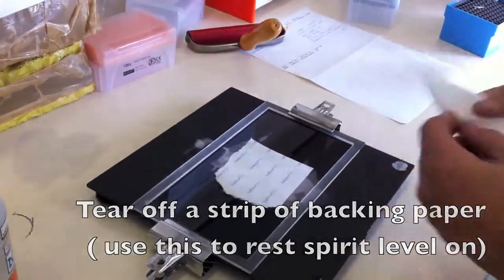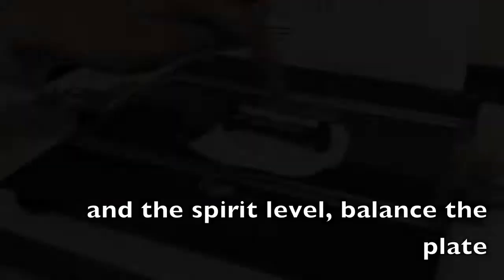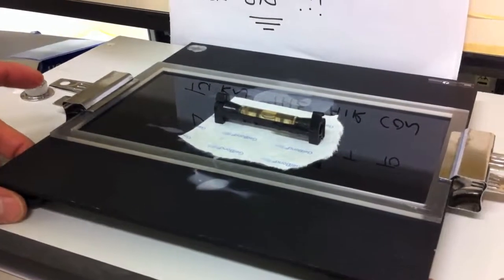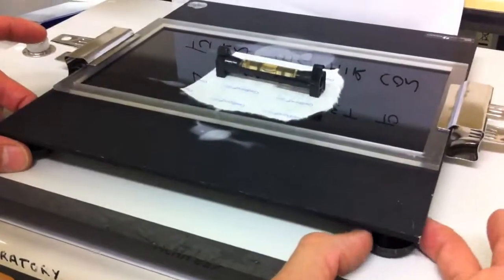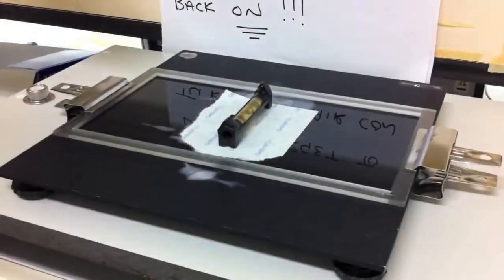The next step is very important. You need to make sure the gel plate is level so that the gel forms evenly. Tear off a strip of the gel bond backing paper. There are three dials underneath the plate, two at the front and one at the back. These are used to level the plate. With the spirit level running left to right on the gel plate, use the two front dials to balance the bubble so it's in the centre of the spirit level.